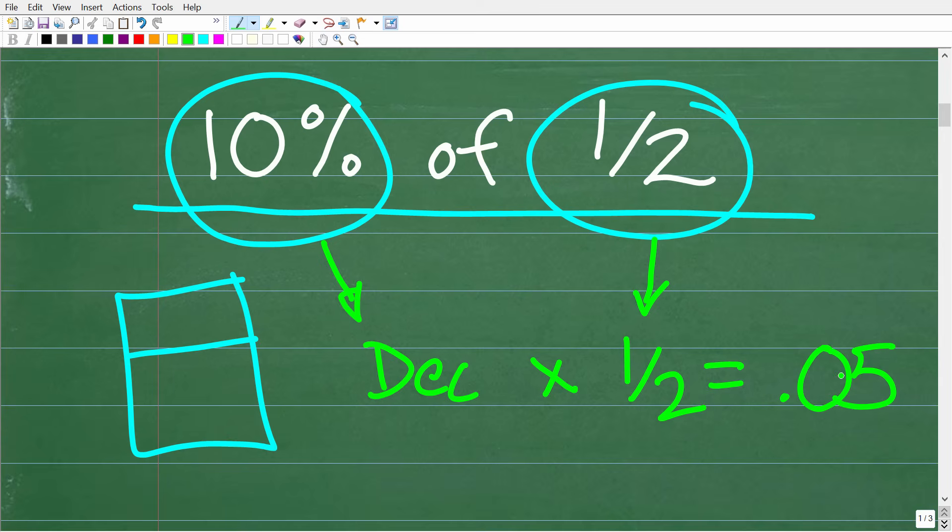Now if you got 0.05 as your solution, that is fantastic. I definitely have to give you a nice little happy face and an A+. Good job. Now again, we are using our calculator. I'm going to show you how to find the answer or an equivalent answer without using a calculator in just one second. But let's go ahead and just walk through the process here.